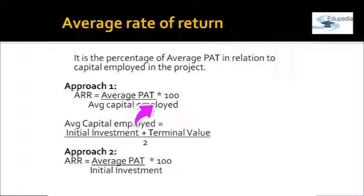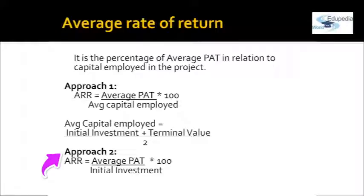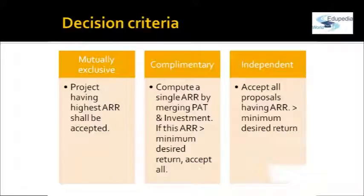There are two approaches. If the project is in its initial stage, ARR = Average Profit After Tax ÷ Initial Investment. If additional capital is introduced, you compute average capital employed, which is the average of initial investment and terminal value. Then ARR = (Average Profit After Tax ÷ Average Capital Employed) × 100. The decision criterion is comparing ARR with the minimum required rate of return, which is the organization's hurdle or cutoff rate. If ARR exceeds this rate, the proposal is accepted.